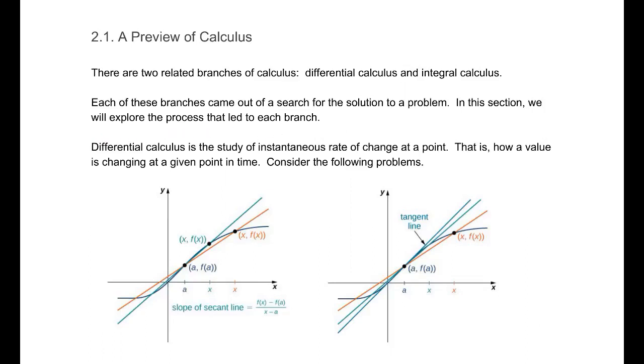This is the study of instantaneous rate of change at a point. That is, we want to know the slope of a function at a particular point. So in this example, we actually want to know the slope of this point right here, the point a, f of a. We want to know the slope of that green line.